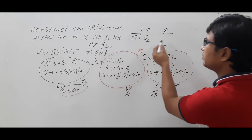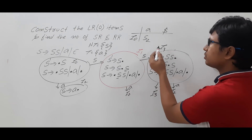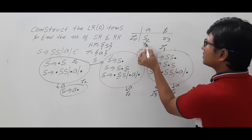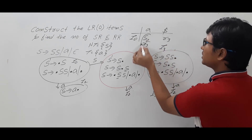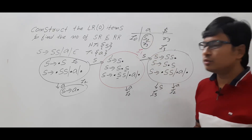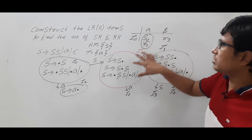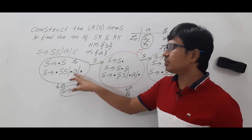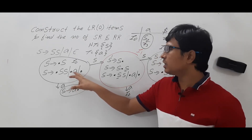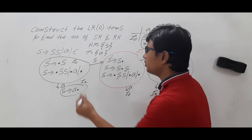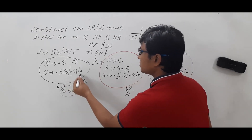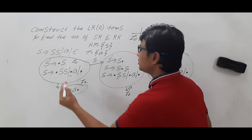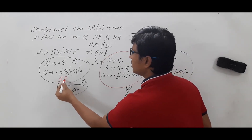As it is a reduced move, I should write it everywhere. So this is R3 and there is an SR conflict. After the dot there is a non-terminal, so this is a shift move and this is a reduce move. So I can say that item number I0 consists of an SR conflict.